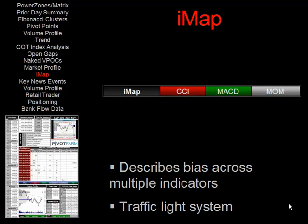We also have a tool called the IMAP, or Indicator Map. This tool gives you, at a quick glance, the bias across five different indicators using the same traffic light system as other tools. It describes the CCI, MACD, momentum indicator, stochastics, and RSI — showing potential bullish movement in green, red for bearish indication, and gray for neutral.